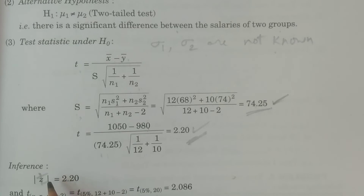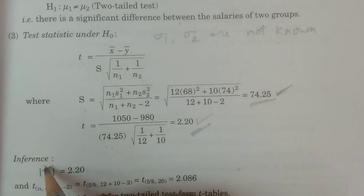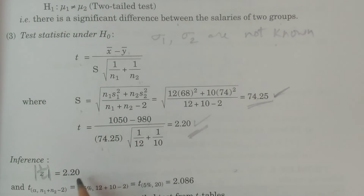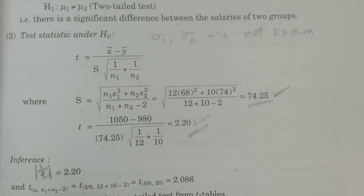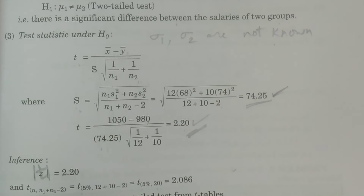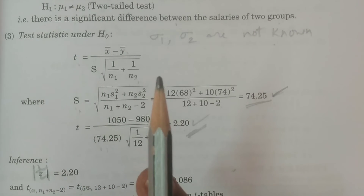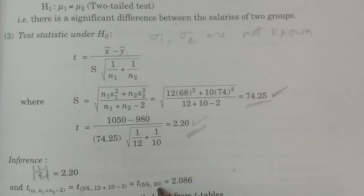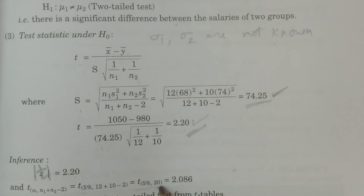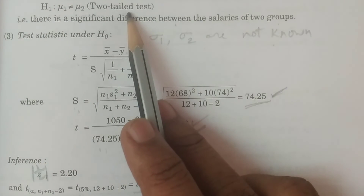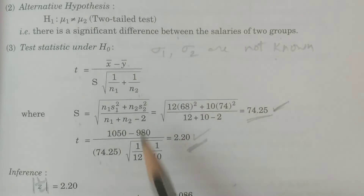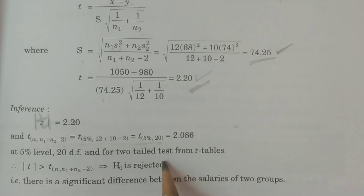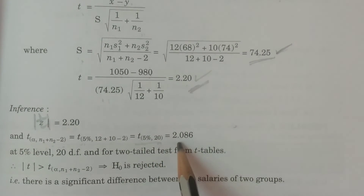Inferential step: comparison and conclusion. The calculated value is |t| = 2.20. Next, the tabulated value: T(alpha, n1+n2−2) at alpha = 5%, degrees of freedom = 12 + 10 − 2 = 20. For a two-tailed test at 5% level with 20 degrees of freedom, T(5%, 20) = 2.086.